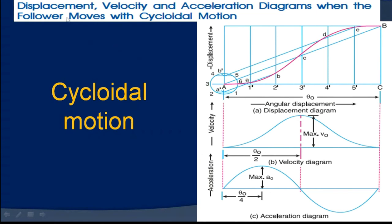That is how the displacement, velocity, and acceleration diagrams are represented for cam and follower mechanisms when the follower follows different motions: uniform velocity motion, simple harmonic motion, uniform acceleration and deceleration motion, and cycloidal motion.